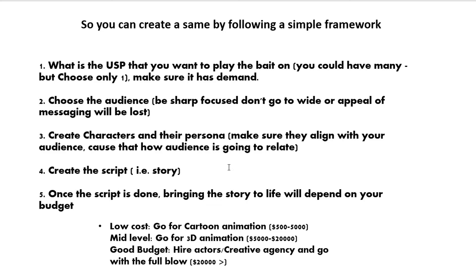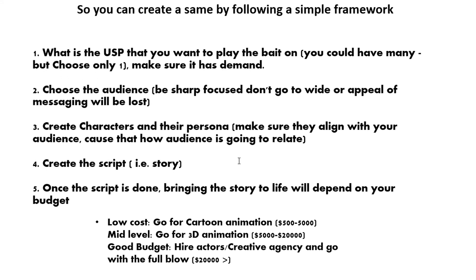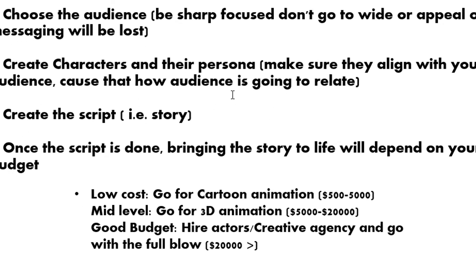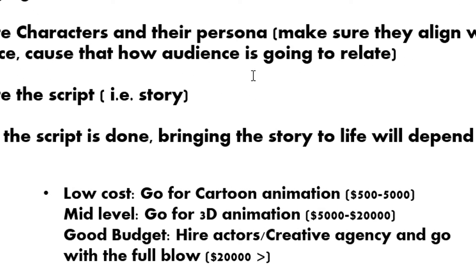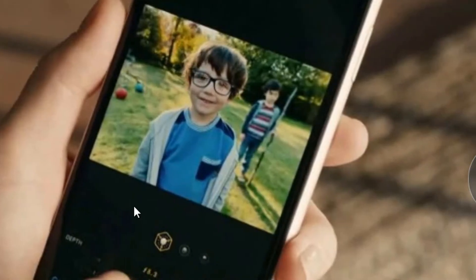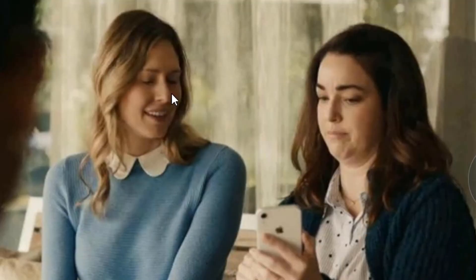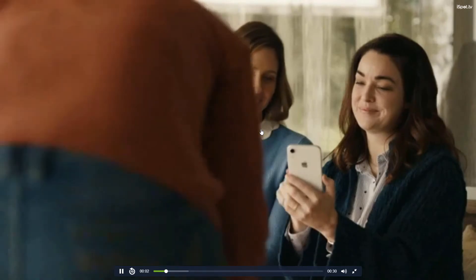Once you've completed the five steps, the final step is to bring your script to life. For low-cost options, you can go for cartoon animation or an explainer video costing less than $500. Cartoon animation typically ranges from $500 to $5,000 depending on quality. For mid-level, go for 3D animation, which costs around $5,000 to $20,000. If you have a good budget, hire actors and work with a good creative agency — budgets range above $20,000 to $50,000. Creating a viral video campaign that builds positive brand perception is not that difficult if you follow a structured process.